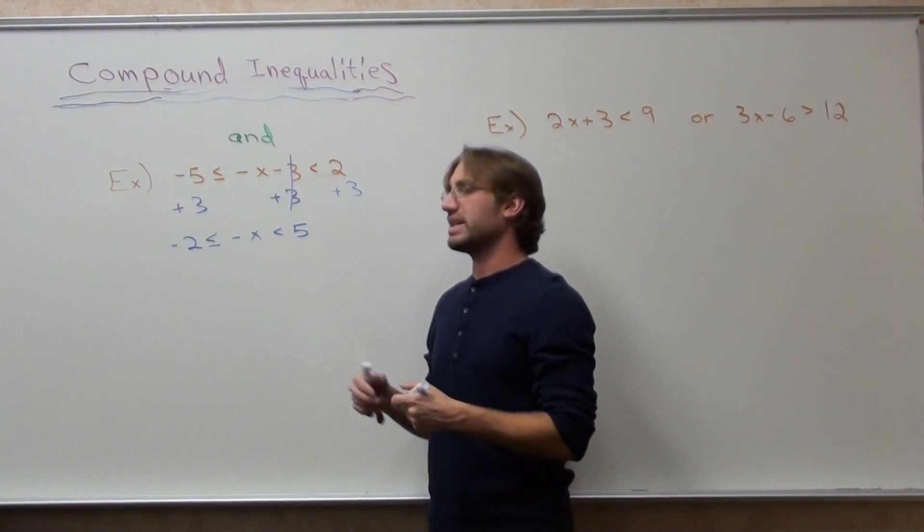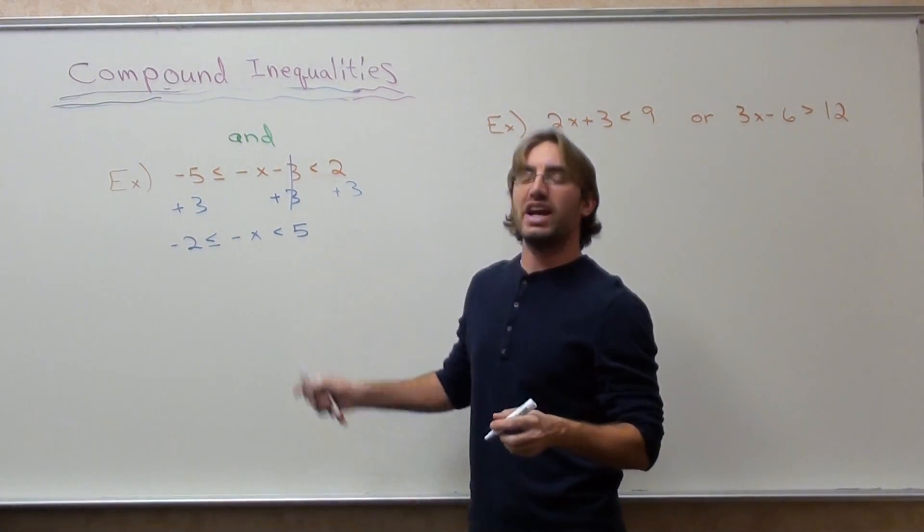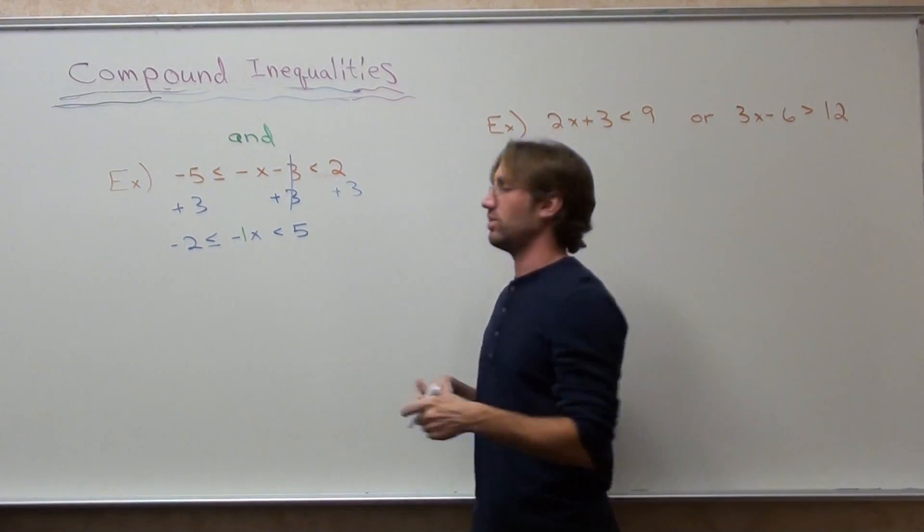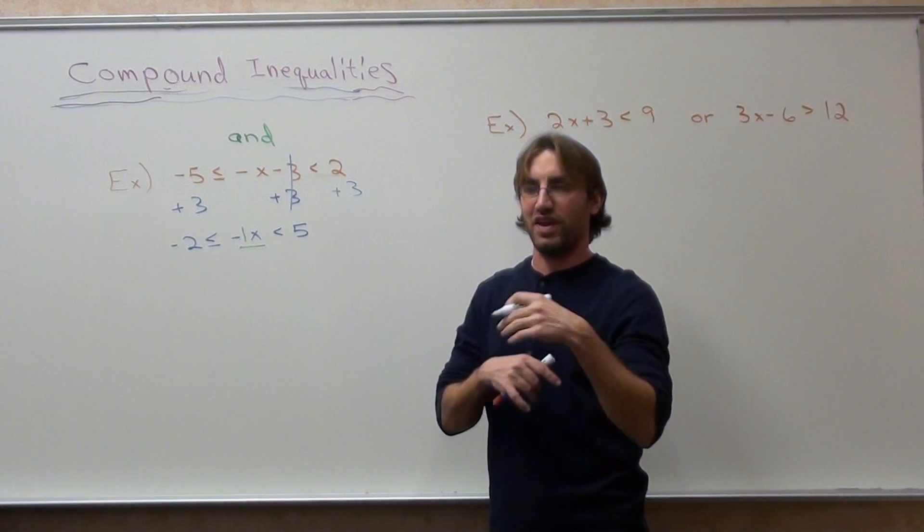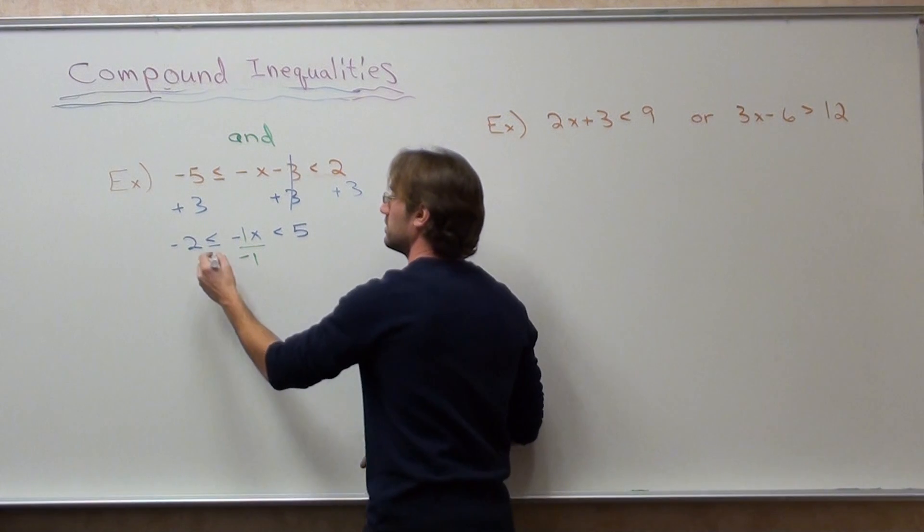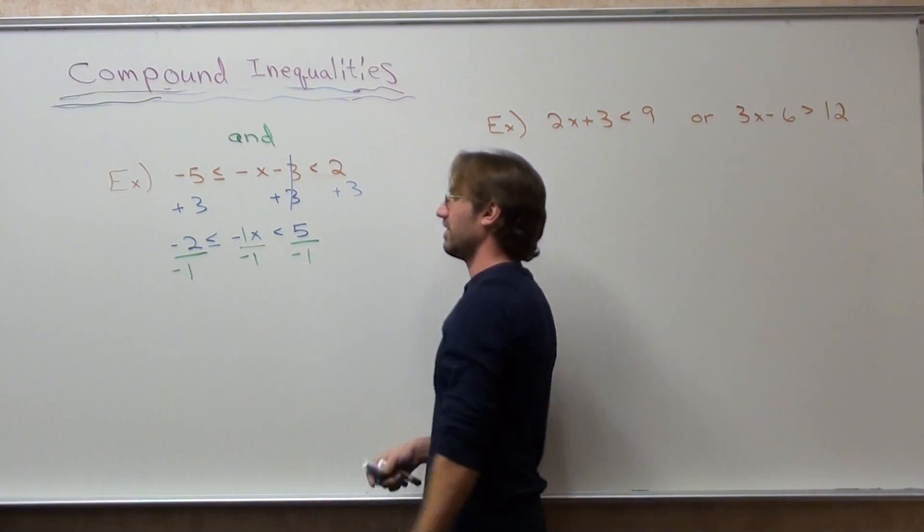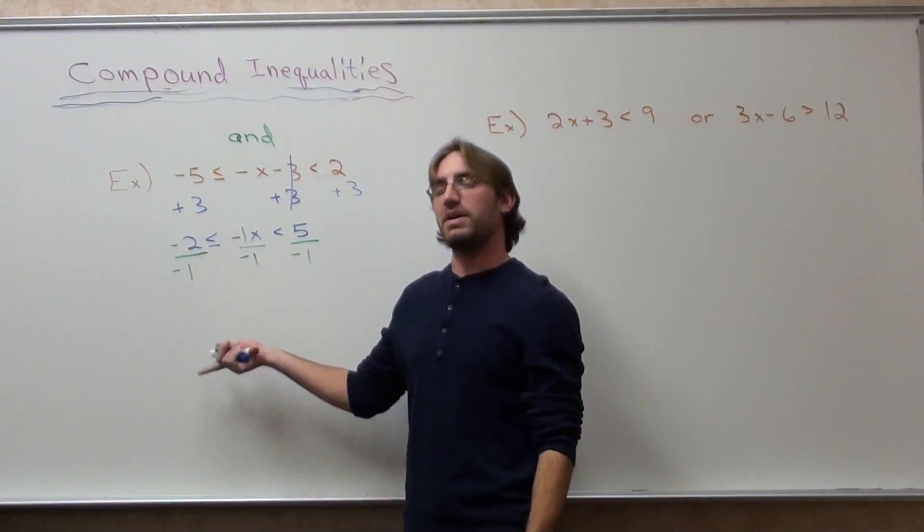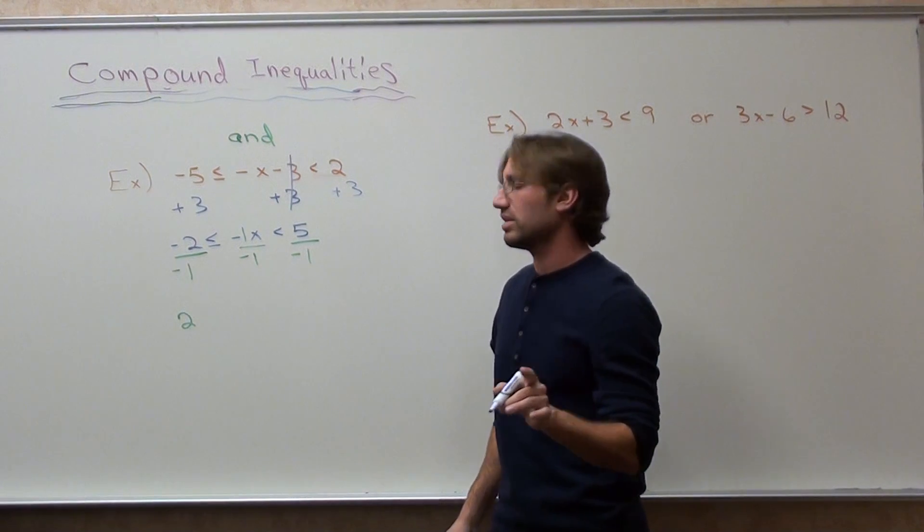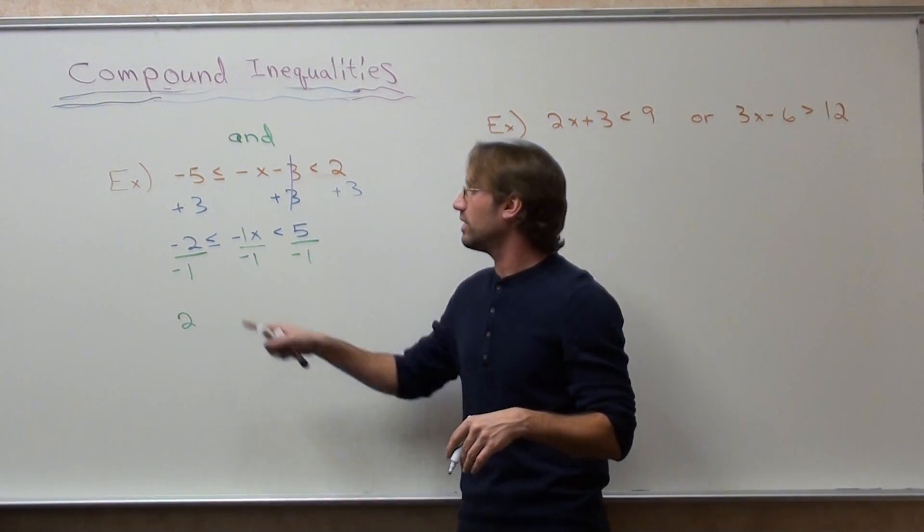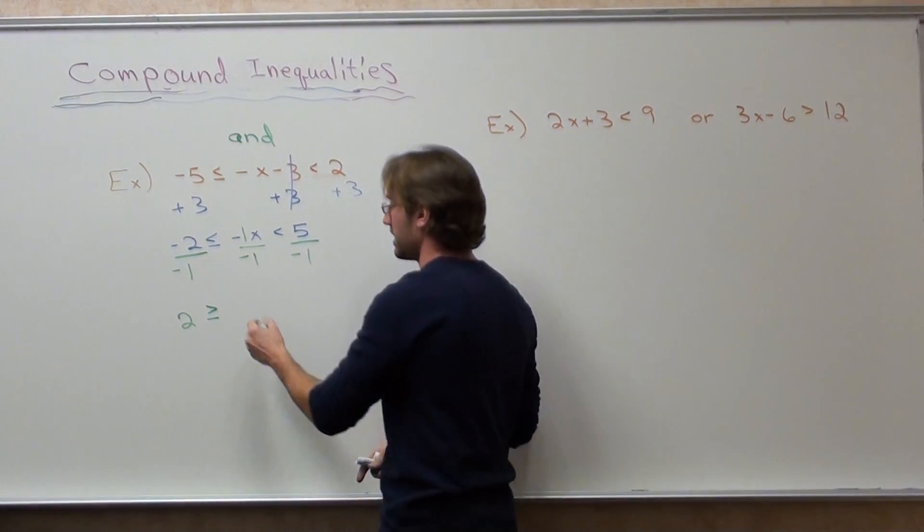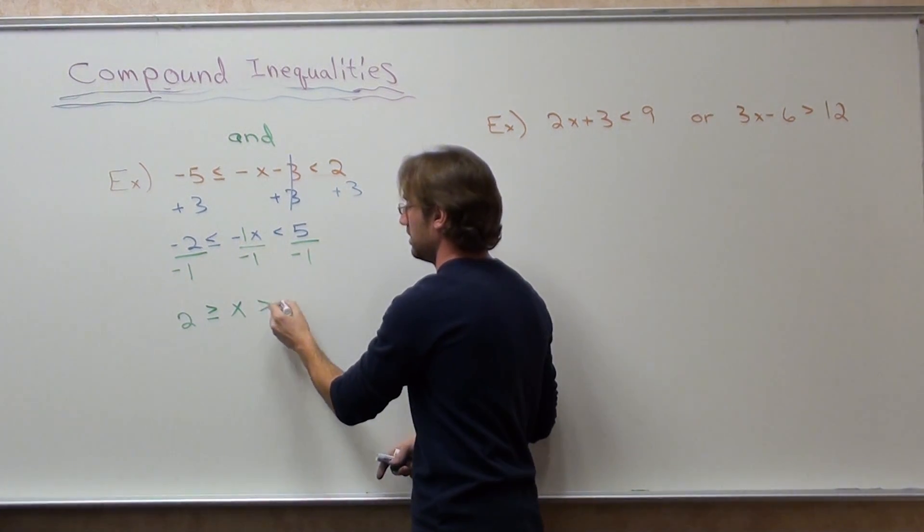Not done. We still have to get x by itself. That's not actually negative x, it's negative 1x. And in order to get rid of negative 1 times x, you have to divide by negative 1. But what you do in the middle of an and, or a compound inequality with an and, you have to do on the left, and you have to do on the right. So negative 2 divided by negative 1 is 2. But before you go any further, because you divided or multiplied by negative, what do you have to do here?